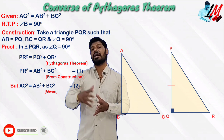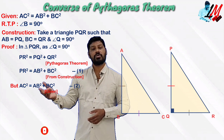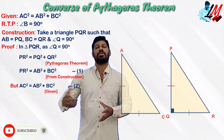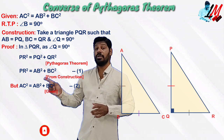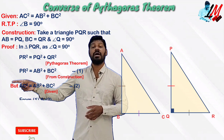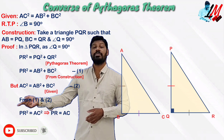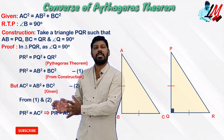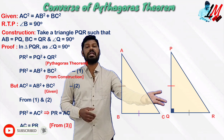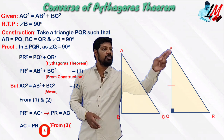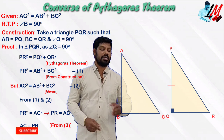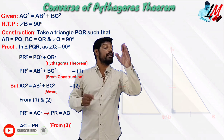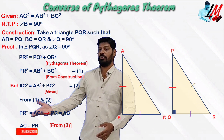Comparing equations: from the construction we have PR² = AB² + BC² — call this equation 1. From the given information, AC² = AB² + BC² — call this equation 2. Observing equations 1 and 2, both equal AB² + BC², therefore PR² = AC², which gives PR = AC — this is equation 3.